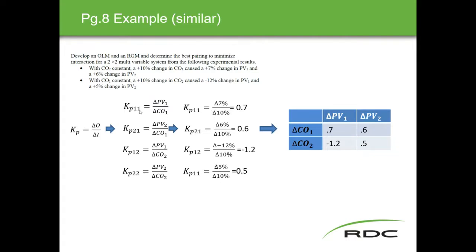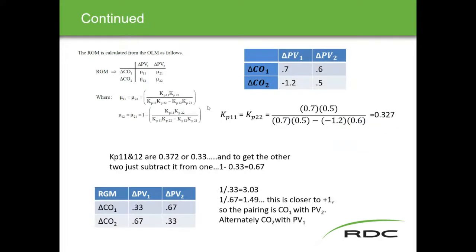In the first loop, controller one to PV1 and PV2, we apply output over input: 6 over 10 gives 0.6, and 7 over 10 gives 0.7. Those go into the grid — position 1,1 is PV1 with controller one, and position 2,1 is 0.6. The second half of the test is generated the same way, and those numbers go into the open loop matrix grid. From there, we plug the numbers into the associated formulas to get the relative gain matrix values.